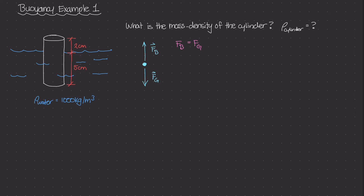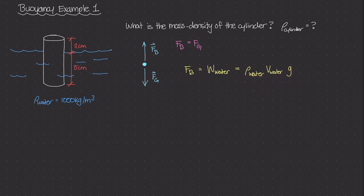Let's start with F sub B — the buoyant force. That is equal to the weight of the water displaced, which is the mass density of the water times the volume of the water displaced times our gravitational constant. Mass density times volume gives us mass, and mass times gravity gives us weight, or a force.